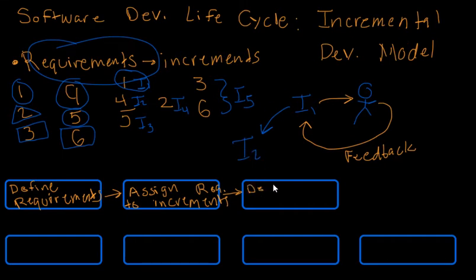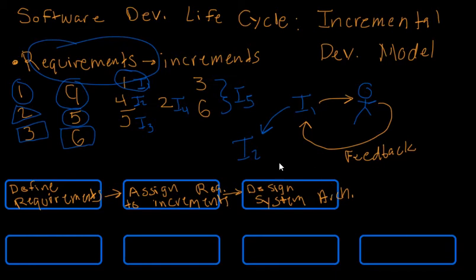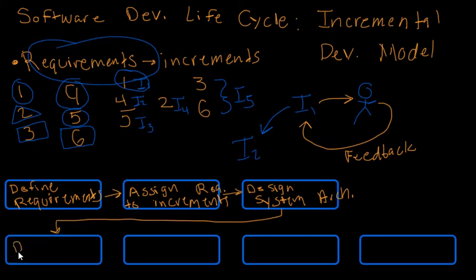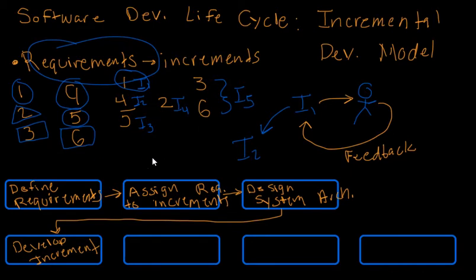We're going to move on to the next phase of the incremental development model: design the system architecture, which we'll abbreviate as 'arc'. This is very similar to the design and implementation phase in the waterfall model — we're just designing how we're going to fulfill our requirements through increments. Then we move to the next phase: develop increment, which is similar to the code and develop phase in the waterfall cycle, except instead of modules we have increments.